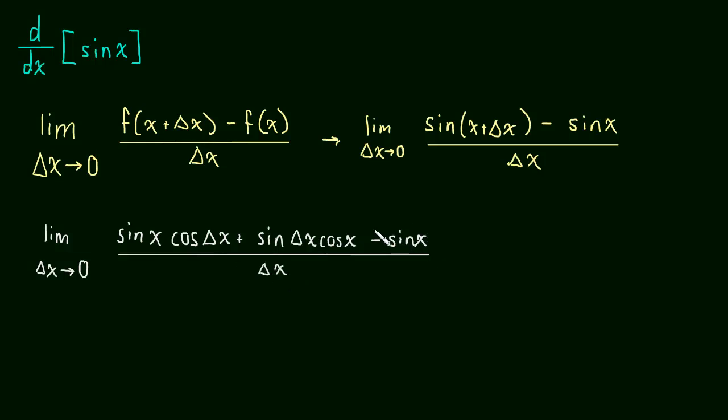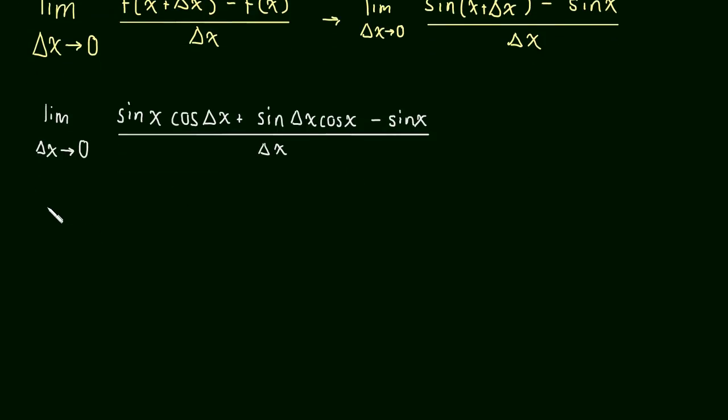Now what I want to do is break this up into two limits. So this will become the limit as delta x approaches 0 of sine x cos delta x minus the sine of x all over delta x plus the sine of delta x times cos x all over delta x.